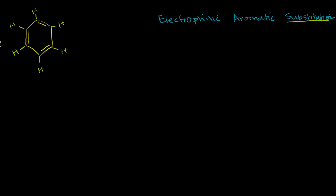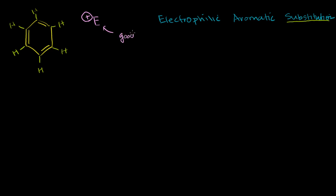Let's say we have a really strong electrophile. I'll give particular cases in the next few videos so you can better visualize what a really strong electrophile is. Just from the word itself — electrophile — you can imagine it's something that loves electrons. It's really good at getting electrons. It usually has a positive charge, and it is really, really good at getting electrons.